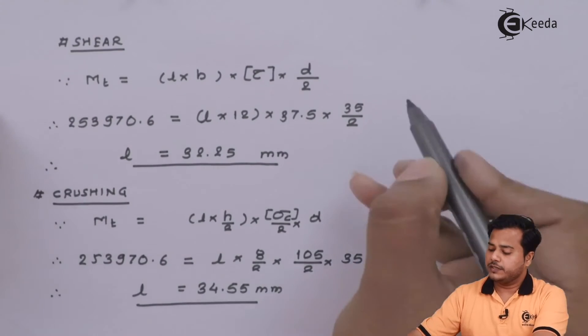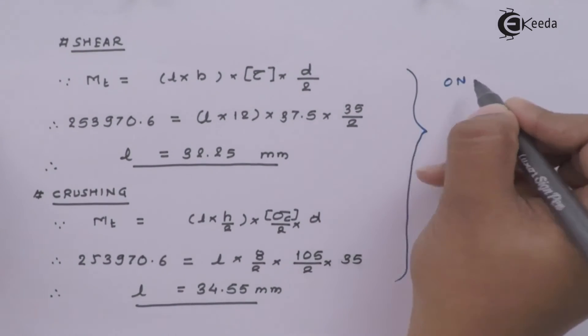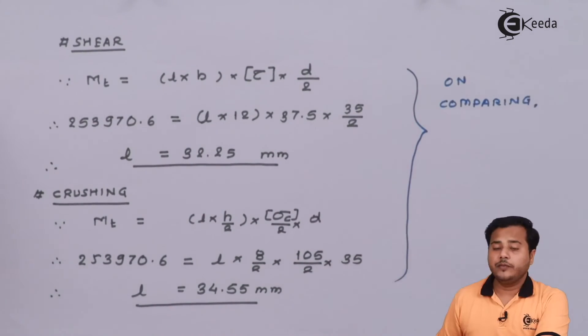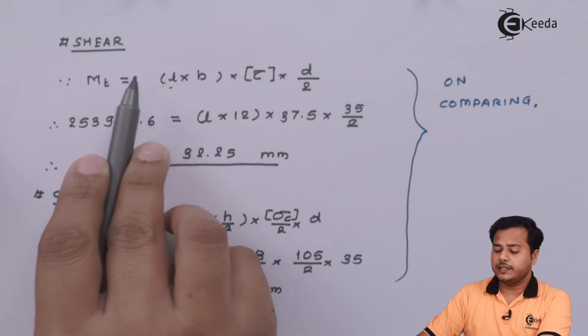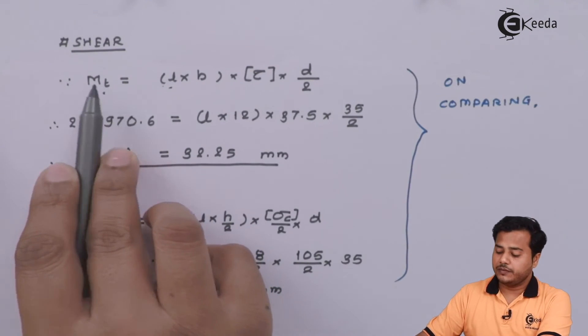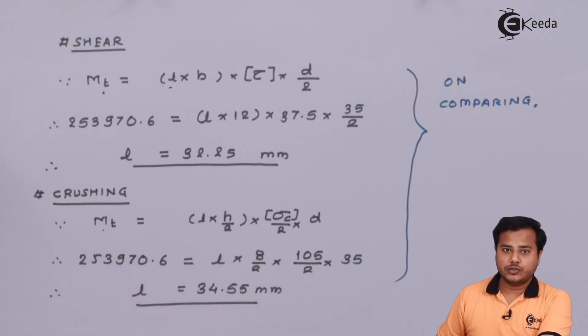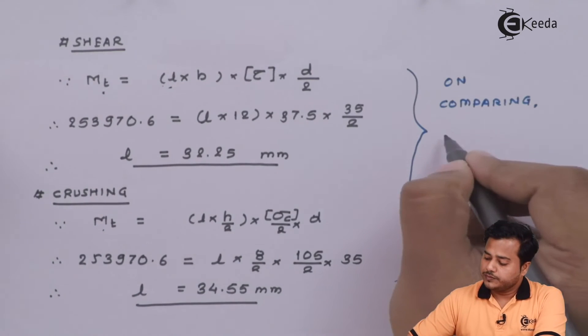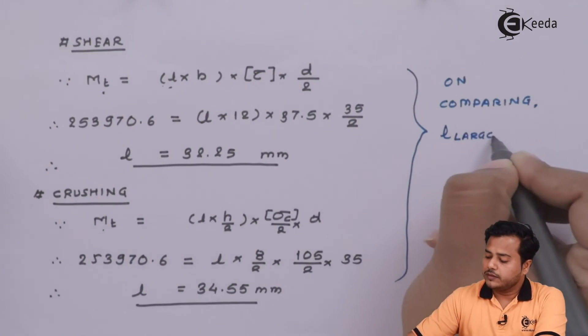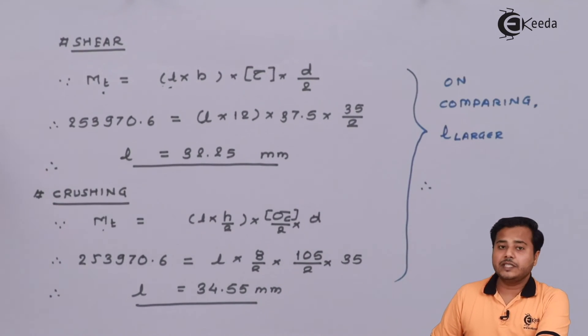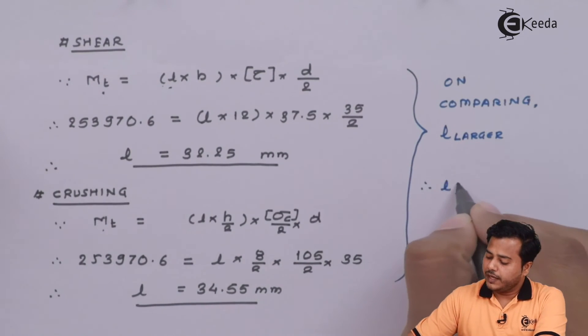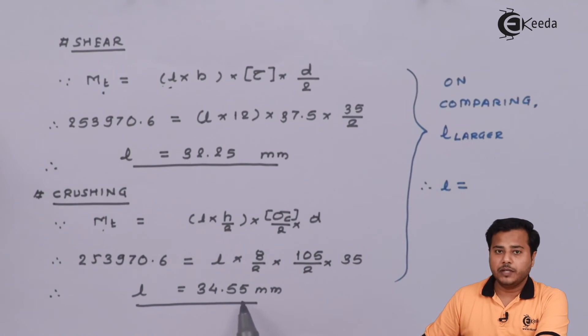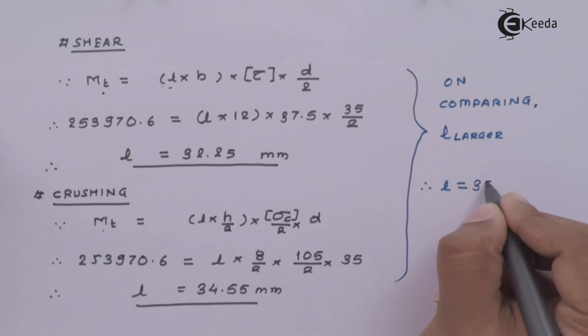If we compare this, we know that length is directly proportional with torque transmission capability. If we increase the length, capacity will also increase, but if we decrease length, it will decrease. So let us go for larger value of length. Therefore, the length expected for the key L comes out to be 34.56 millimeter. If not a standard or preferred value, let us make it 35 millimeter.